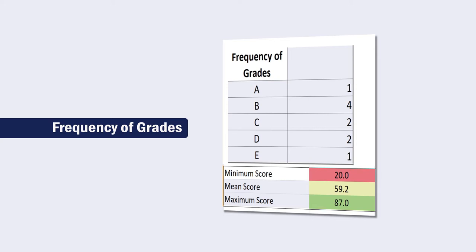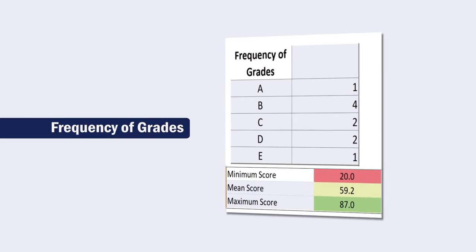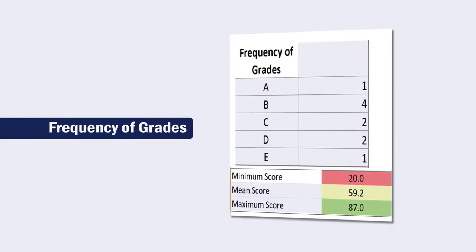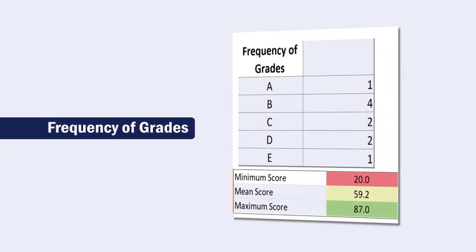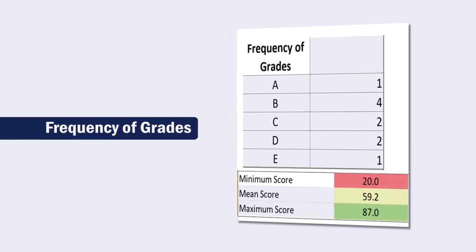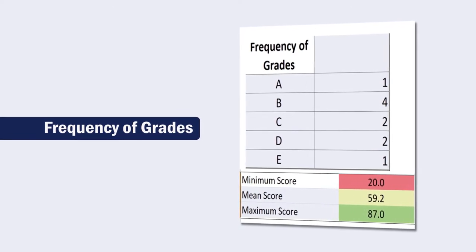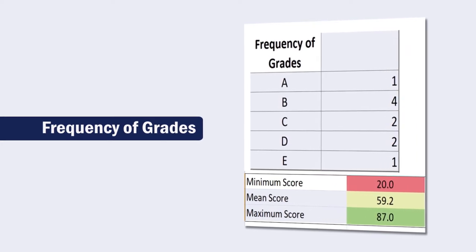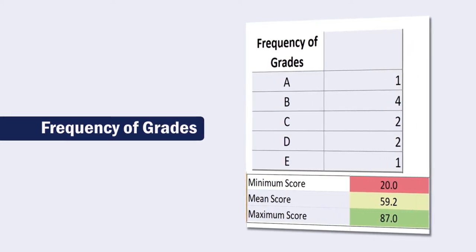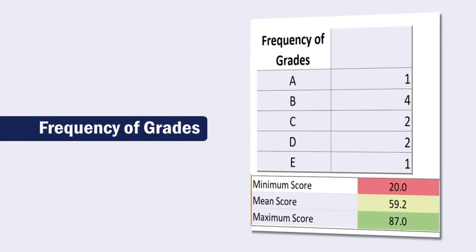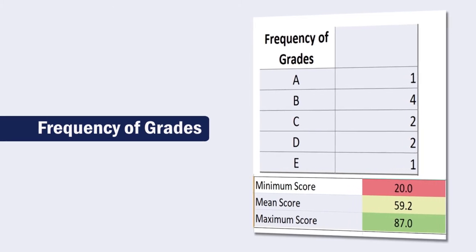Frequency of grade can be derived from the data. That becomes very useful information. The shown data results in: one student got an A grade; four students got B; two students got C; two students got D; and one student got E. The minimum score is 50, the mean score derived is 59.2, and the maximum score is 87.0.